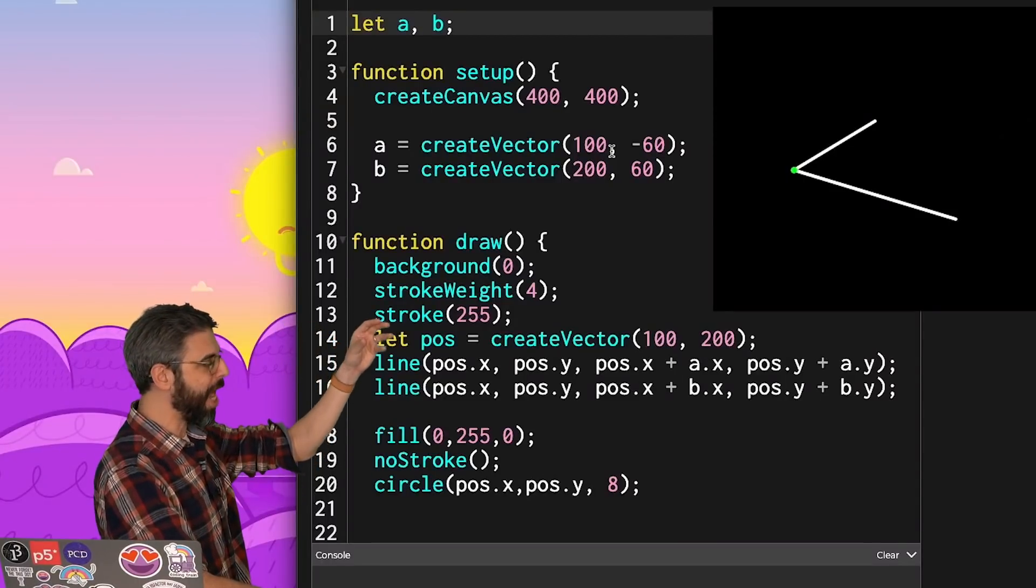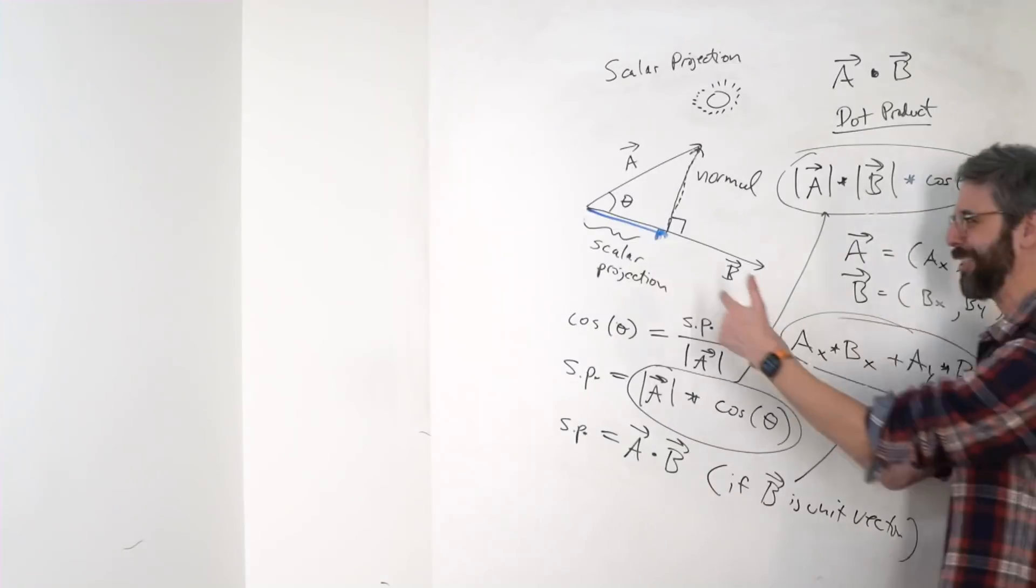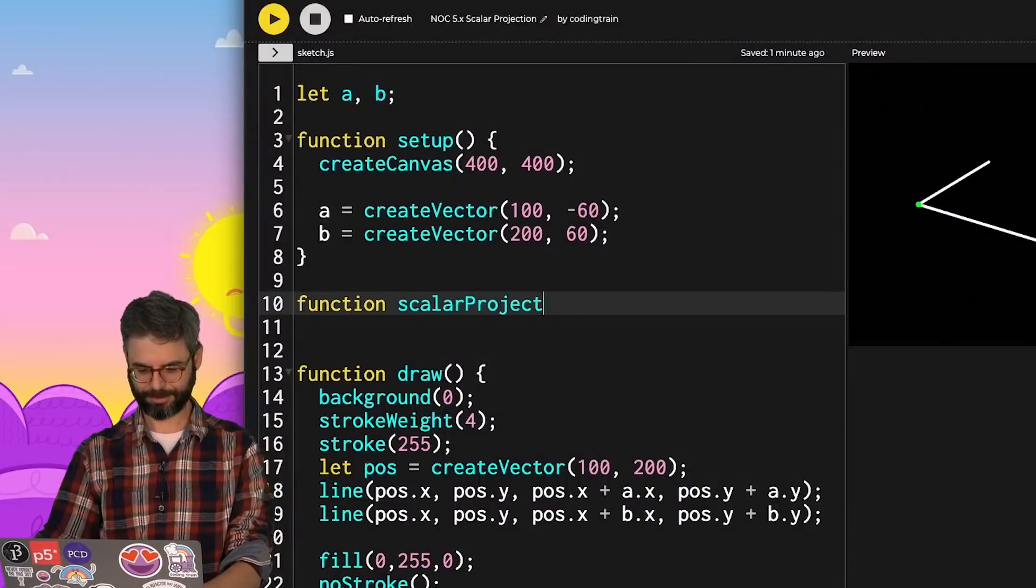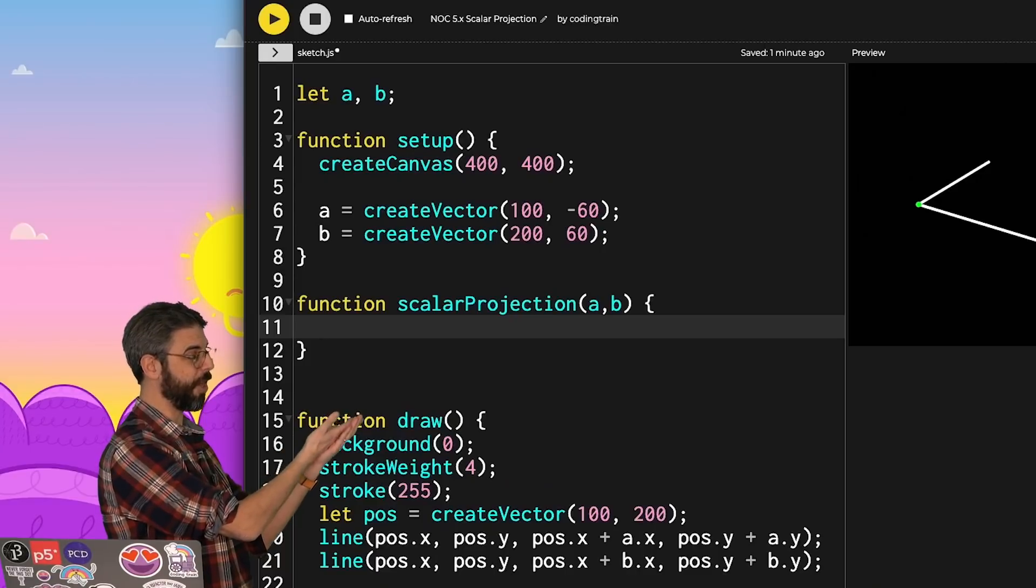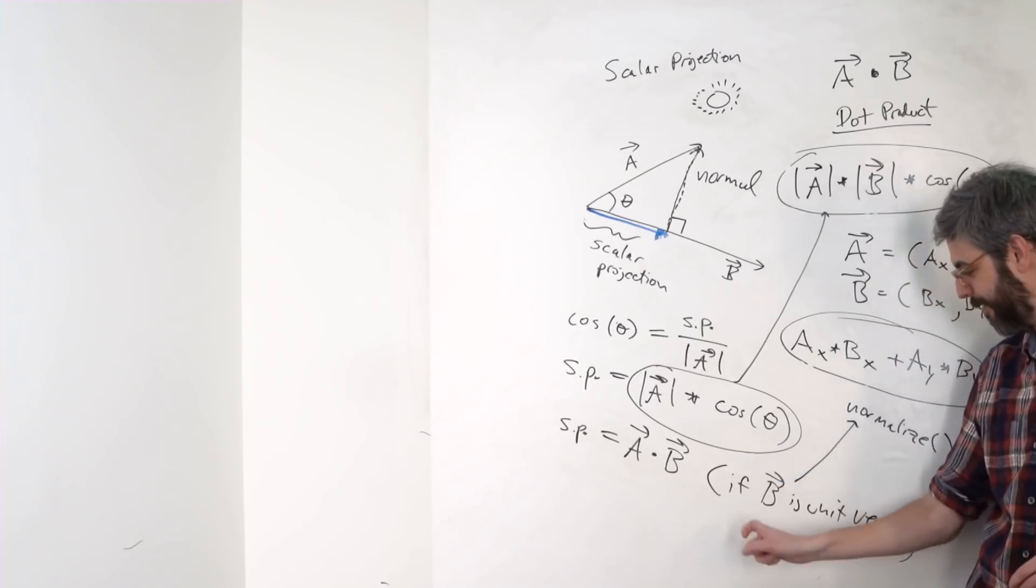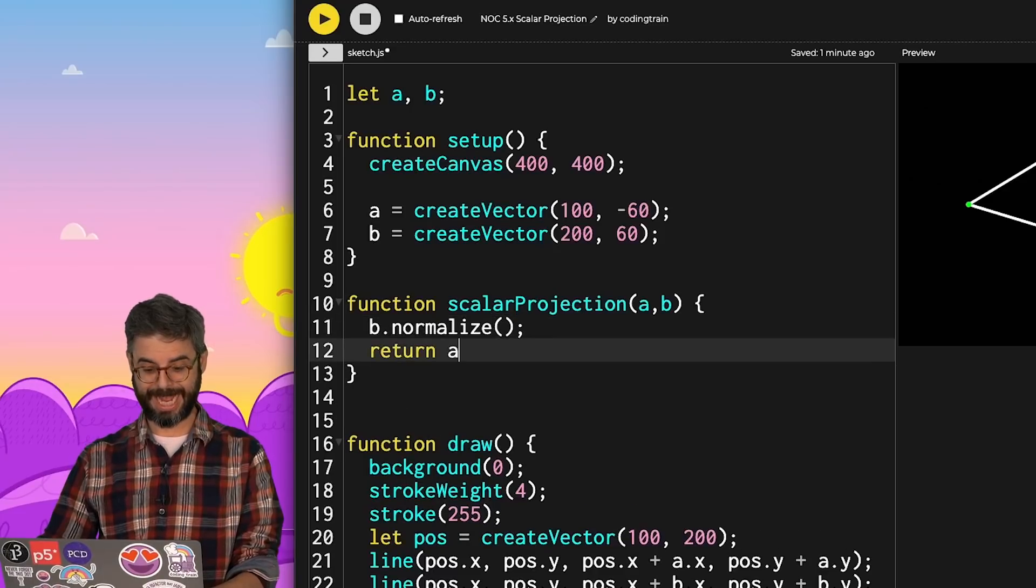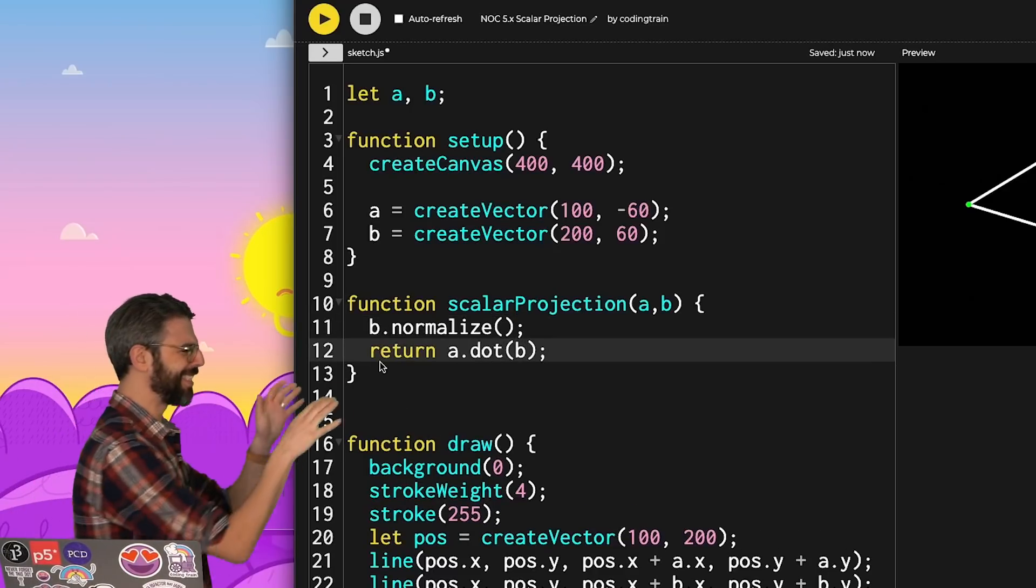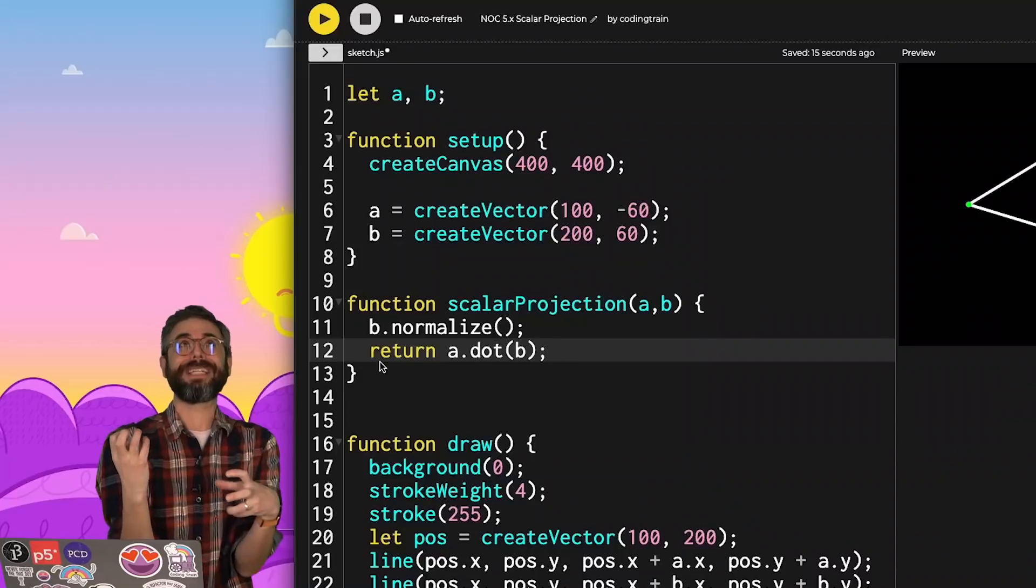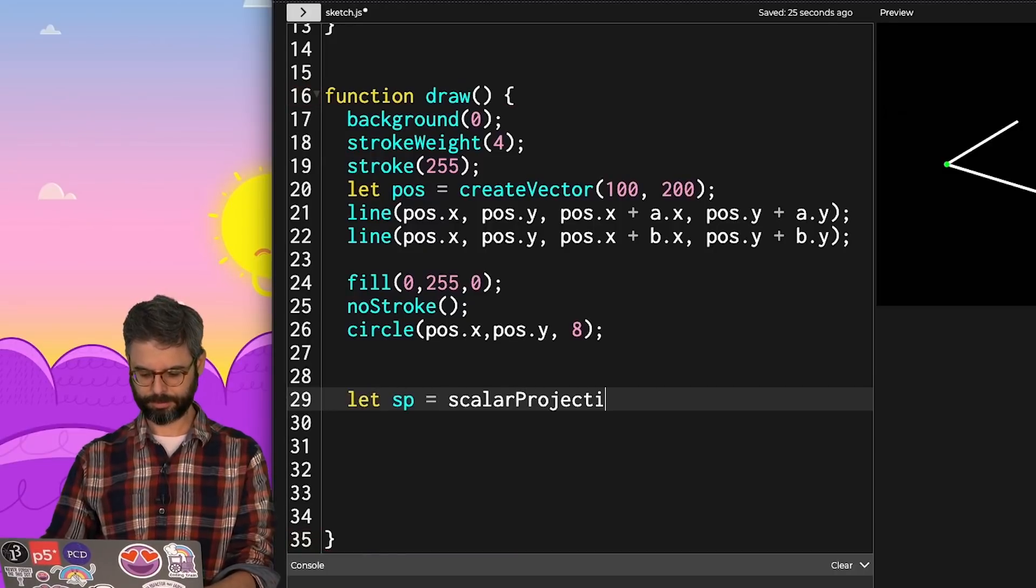I'm drawing each vector as a line that emanates from an arbitrary position 100 comma 200 in the canvas. Now I'd like to draw this blue vector. So first, let me try calculating the scalar projection. I've written a function, the scalar projection of two vectors A and B, which equals the vector A dot the vector B if B is a unit vector. So I can say B dot normalize, return A dot B. It's A dot dot B. We have a function named dot. We get to write the dot and have the word dot. It's so much dot.